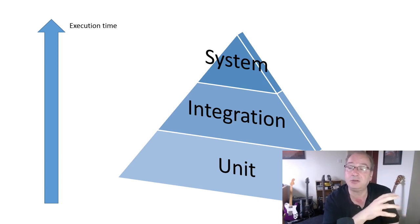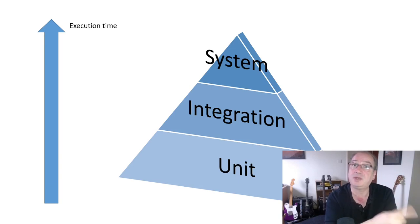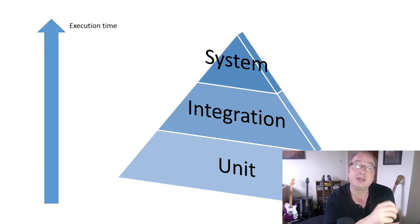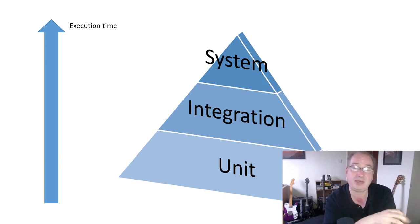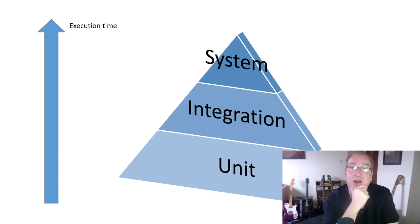End-to-end tests are essentially smoke tests — tests of configuration. Unit tests test all the logic, integration tests test all the contracts between pieces of the system, and then end-to-end tests verify: does it actually work in this deployed environment? They're not there to test logic. If a system test is failing but none of your unit or integration tests are failing, you've missed an internal test.